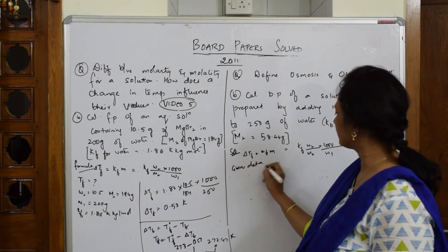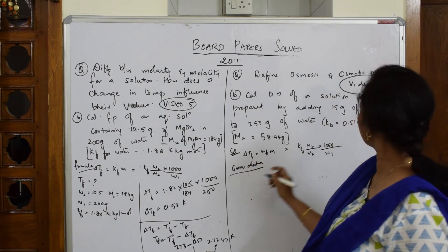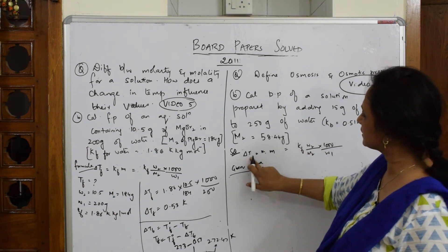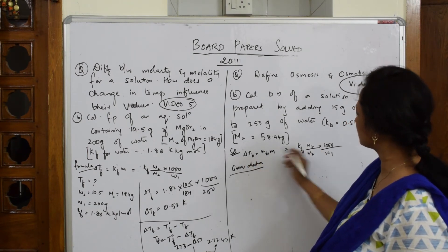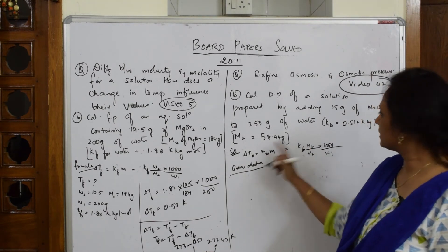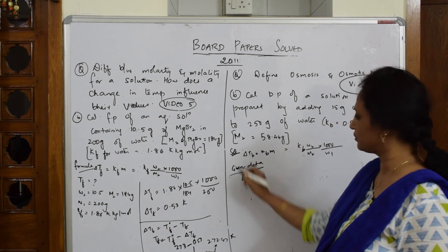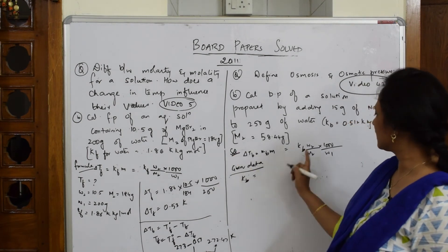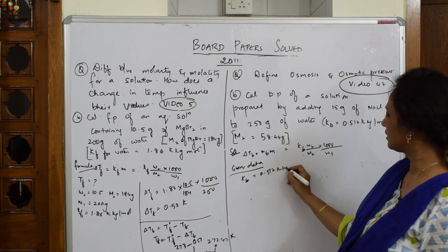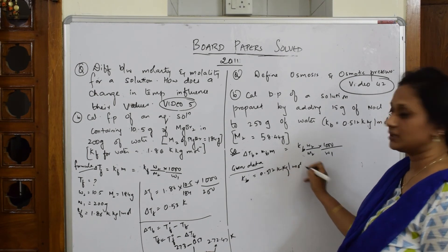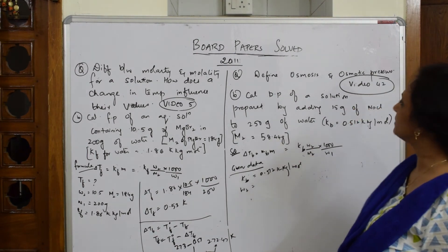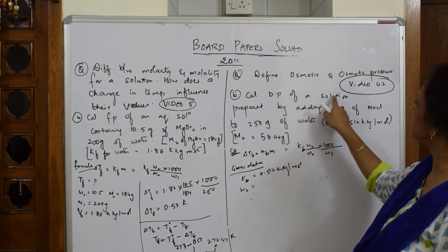Let's see the given data. KB equals 0.512 kg per mole. Calculate the boiling point of solution prepared by adding 15 grams.